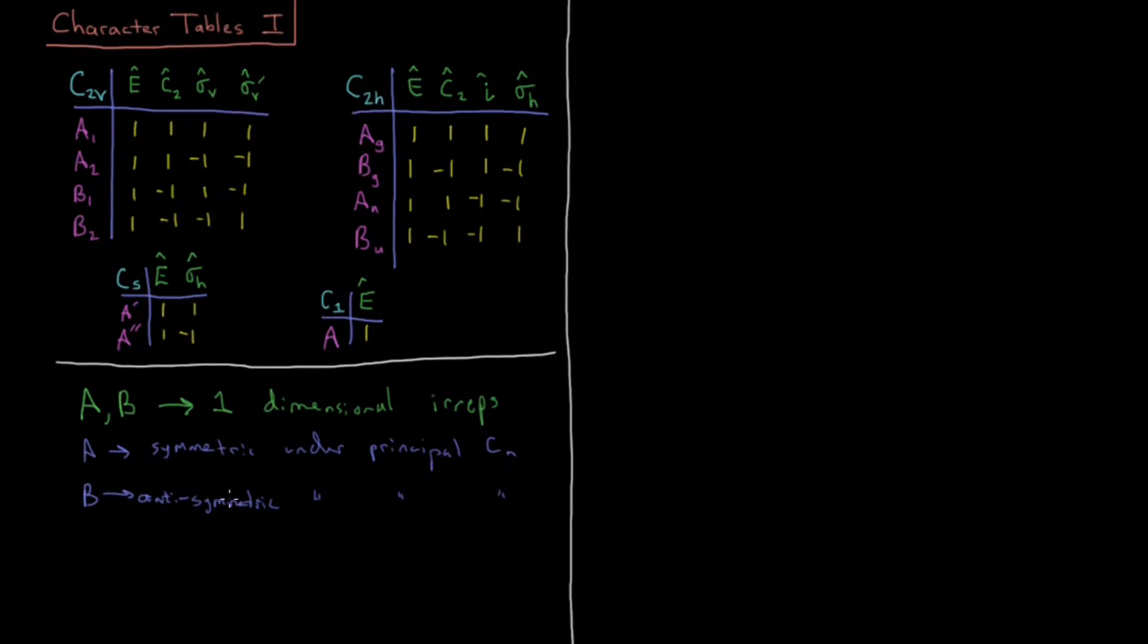So some more points that we want to point out is every point group has a totally symmetric irrep. So every point group has a totally symmetric irrep inside of the character table. For C2v, we see this is A1, 1, 1, 1, 1.